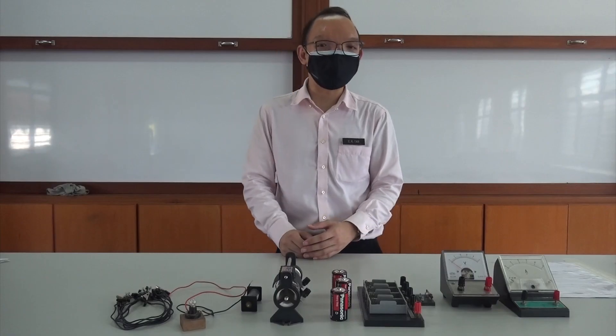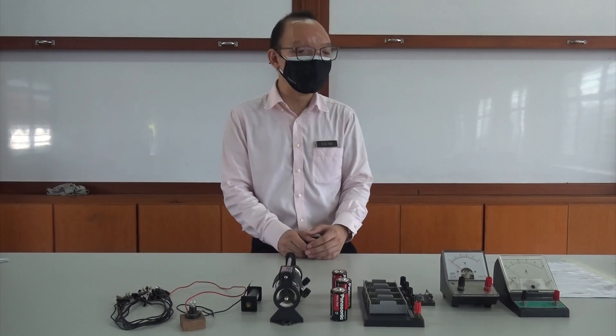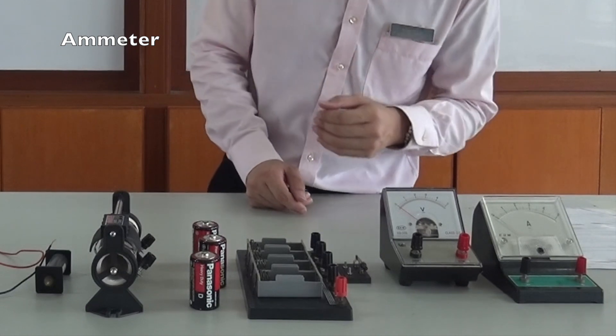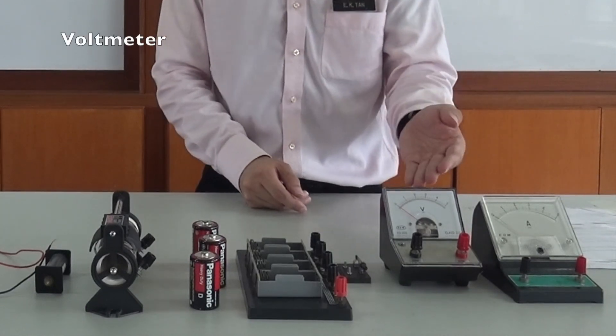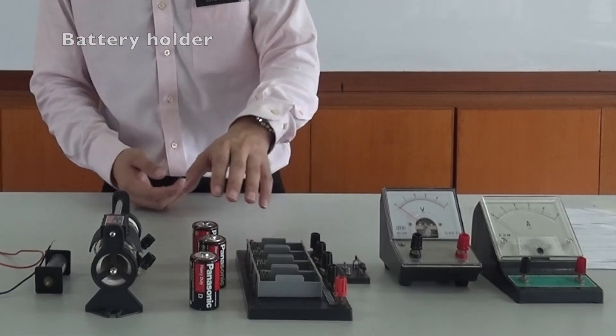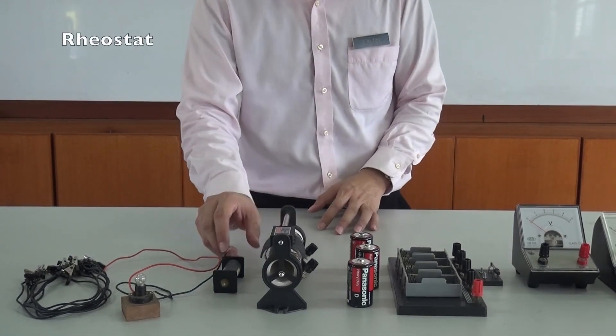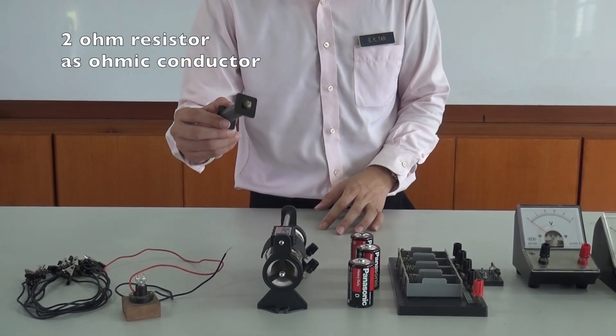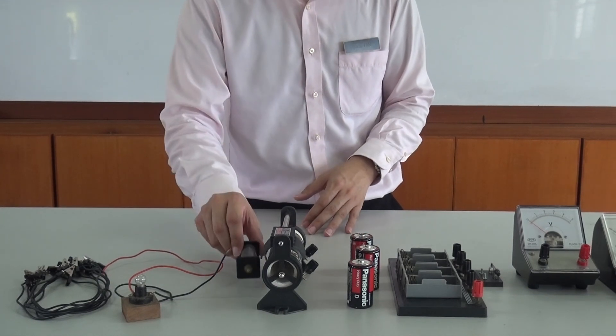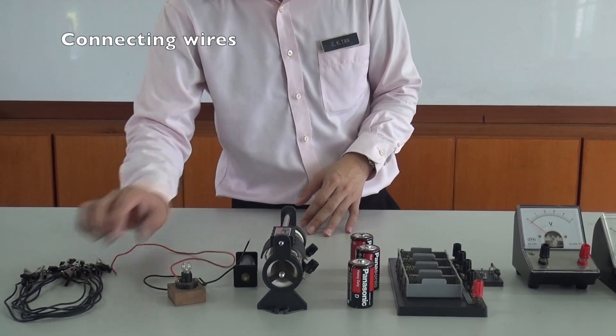At first, let me introduce the apparatus that we will use in this experiment. Over here, we have ammeter, then followed by voltmeter, then a battery holder with three E batteries so that we get a wider range, then followed by a rheostat. This is the 2 ohm resistor. I use it to replace the constantan wire. Then, here we have a non-ohmic conductor, this is the bulb, and some connecting wire.